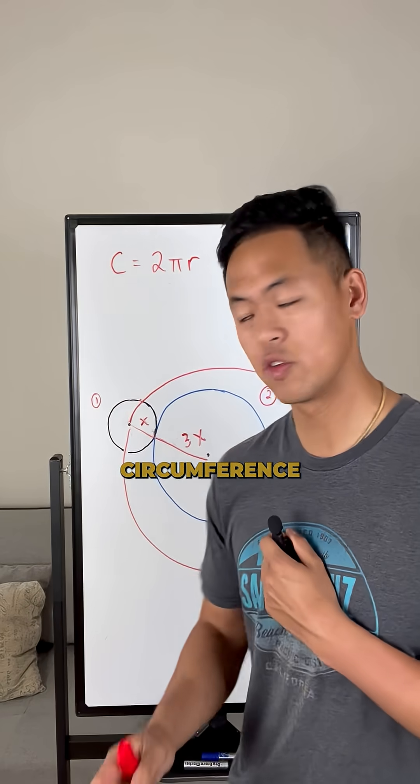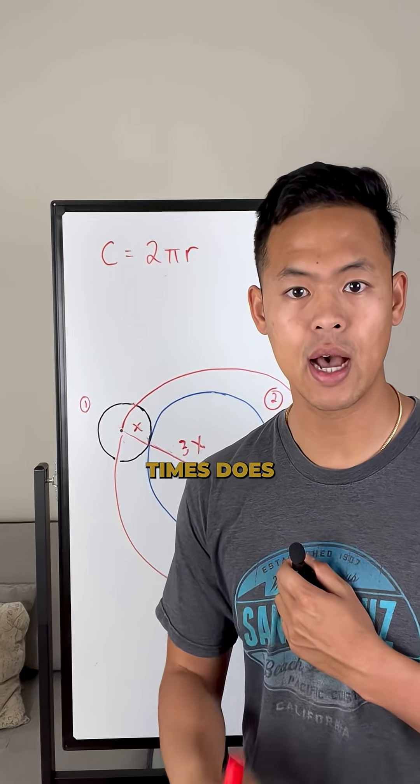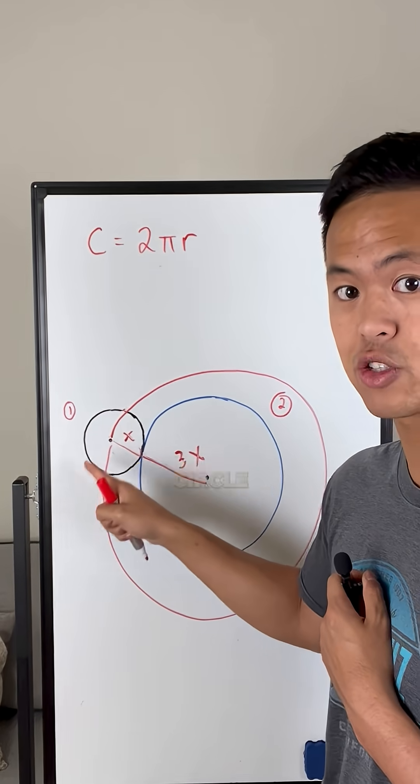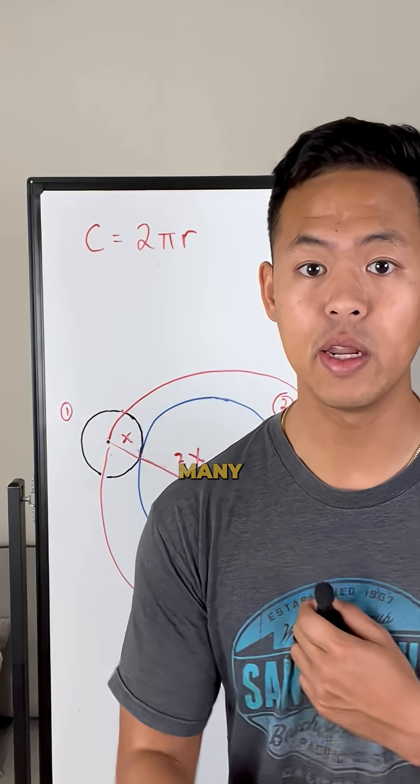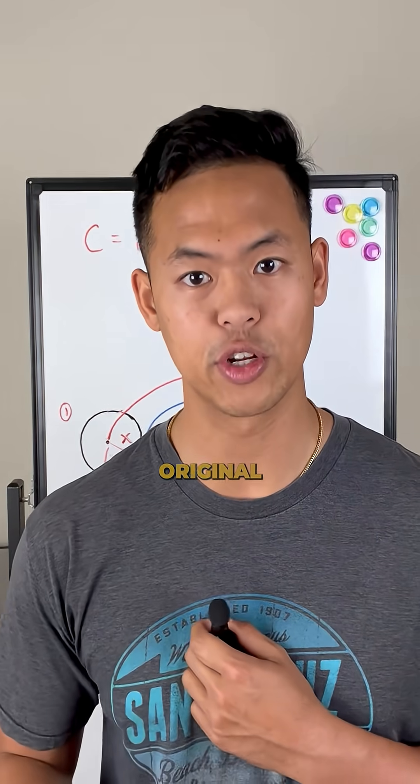Once we know the circumference of the big red circle, we can see how many times does the circumference of the black circle fit inside, which is how many revolutions it will take to get to its original spot.